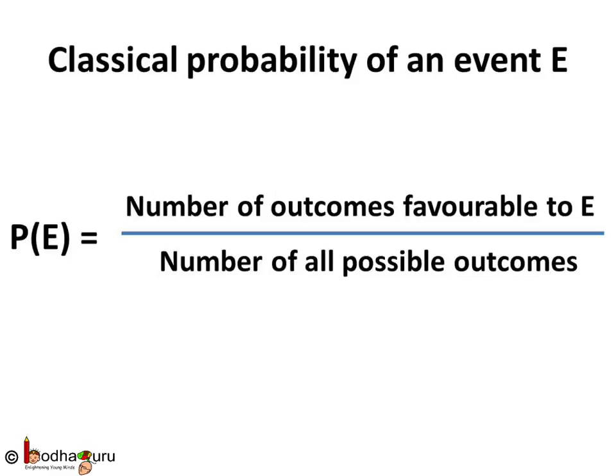The theoretical probability or classical probability of an event E is written as P(E) and is defined as the number of outcomes favorable to E divided by the number of all possible outcomes of the experiment, where we assume that the outcomes are equally likely to happen.